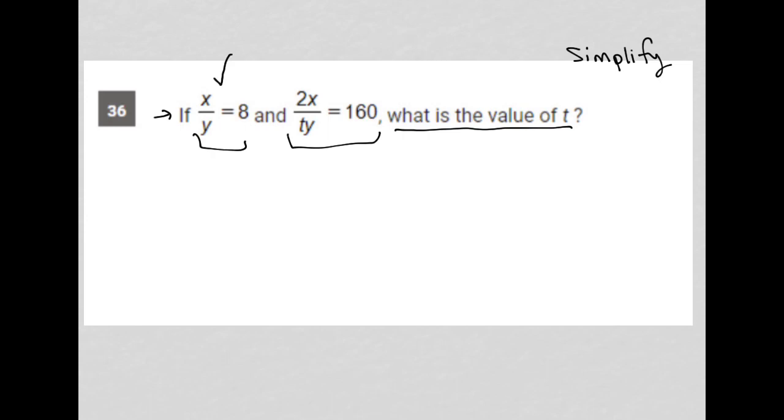So there's not much I can do here for this first equation. I mean, there are things I can do, but I wouldn't know why I was doing it. But here, at least I have this t here, and the question asks for the value of t. So I'm going to take this 2x over ty equals 160, and I'm going to solve for t.